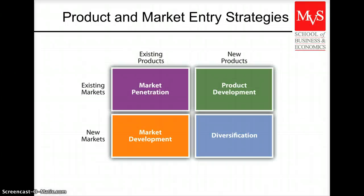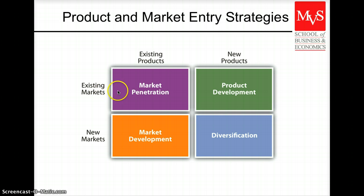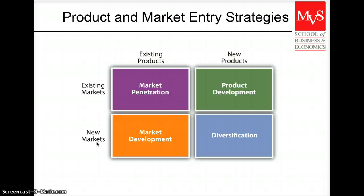This is a very interesting matrix. The first quadrant is called market penetration, and what we're doing in market penetration is basically trying to increase our sales by selling the same product into an existing market. When we talk about market development, what we are trying to do is selling our existing product into new markets. When we talk about new markets, you can think of them from a geographical perspective — let's say we start selling in a new country — but you can also think of new markets such as a new segment that you were not targeting before.